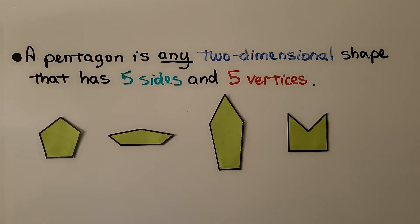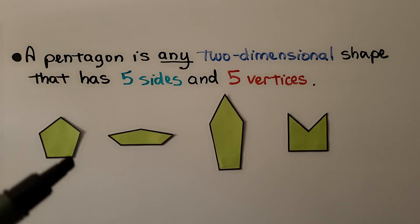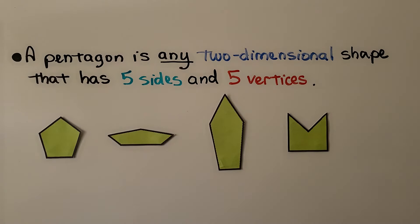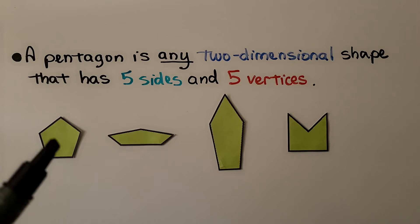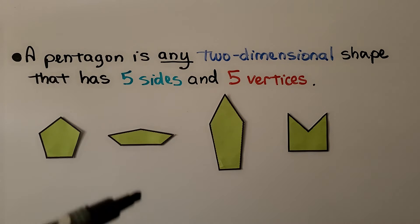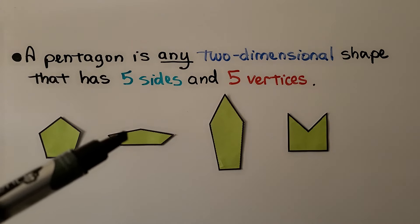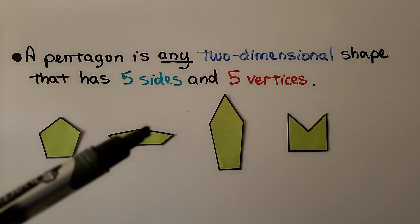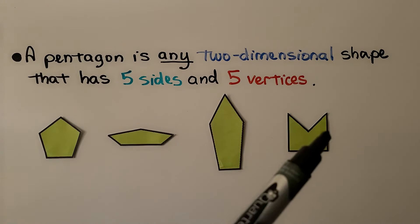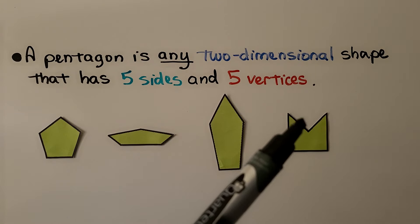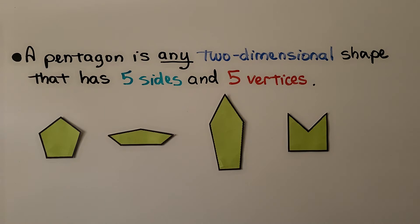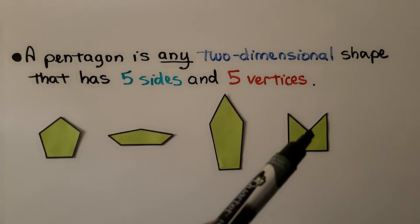A pentagon is any two-dimensional shape that has five sides and five vertices — one, two, three, four, five sides and five vertices. It's a pentagon. Even one that looks squished and flattened, with one, two, three, four, five sides and five vertices, is still a pentagon.